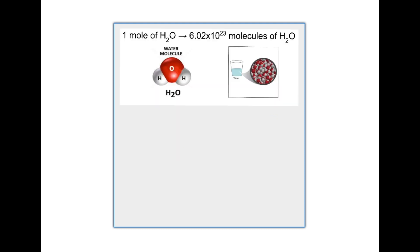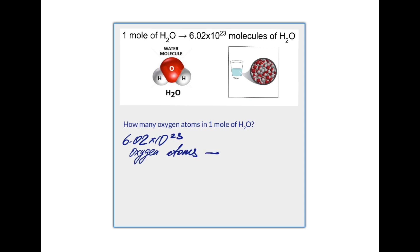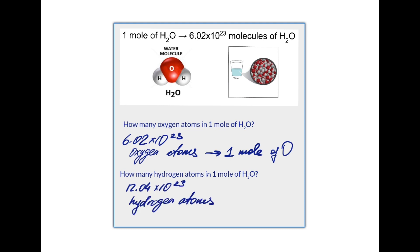One mole of water is made out of 6.02 × 10²³ molecules of water — it is the H₂O molecule repeated that many times. If we count all oxygen atoms in 1 mole of water, we find 6.02 × 10²³ oxygen atoms, which is 1 mole of oxygen atoms. If we count all hydrogen atoms in 1 mole of water, we find 12.04 × 10²³ hydrogen atoms, which is 2 moles of hydrogen atoms. So 1 mole of water is made of 1 mole of oxygen atoms and 2 moles of hydrogen atoms.